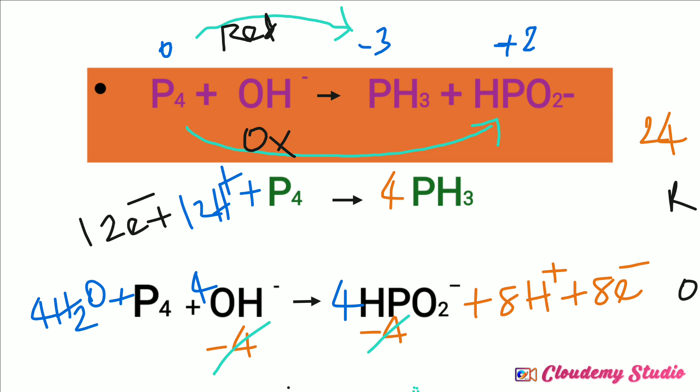To make the 12 electrons into 24, we multiply the reduction half-reaction by 2. To make the 8 electrons into 24, we multiply the oxidation half-reaction by 3 — since 3 times 8 equals 24. Then the number of electrons will be equal in both equations.